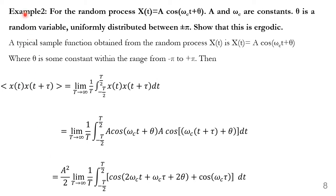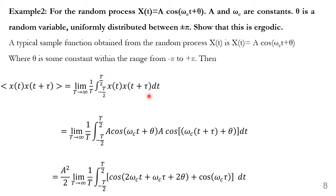Second example: for the random process x(t) = A·cos(ω₃t + θ), where A and ω₃ are constants and θ is a random variable uniformly distributed between −π and +π. Let us take a typical sample function from this process, where θ is some constant between −π and +π. Let us compute the time average of x(t)·x(t+τ) as limit T→∞ of (1/T)∫x(t)·x(t+τ)dt.